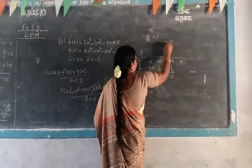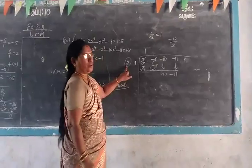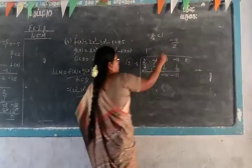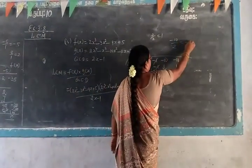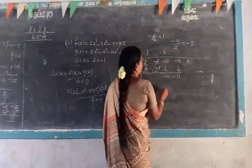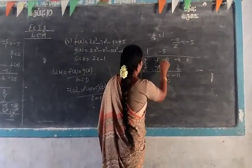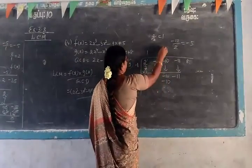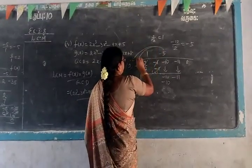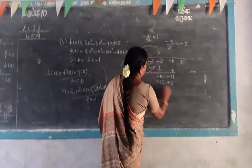Divide minus 10 by 2. Every time you are dividing by the first number only — this first number. So we are reading minus 5. This side, you write minus 5. So minus 10. Minus into minus, we are going to write here. So minus into minus, plus this. So, plus 5.